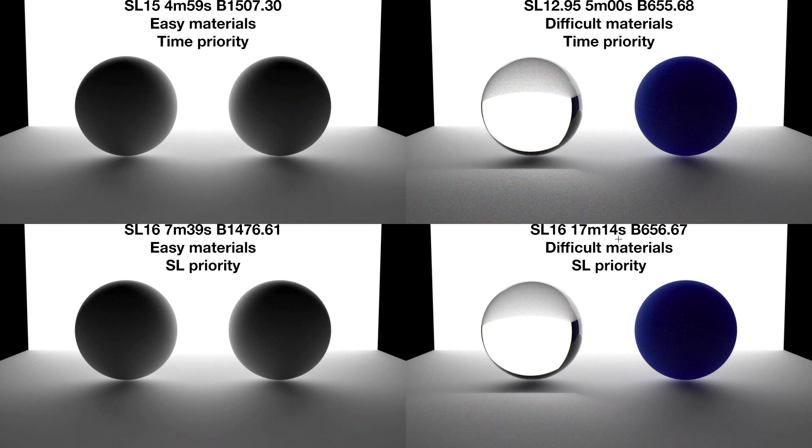The benchmark is a number generated by Maxwell to show how easy or difficult a scene is to render. Low numbers are harder, higher easier. The easy materials are both around 1500 and the difficult materials are just above 650, showing that the difficult scene is over twice as difficult to render as the easy scene.